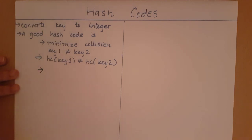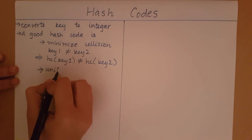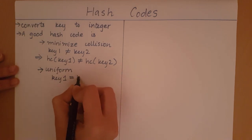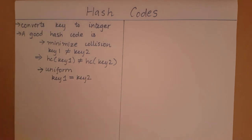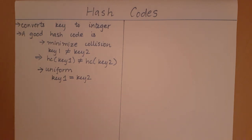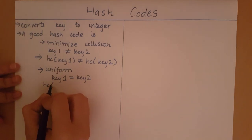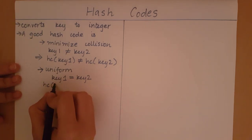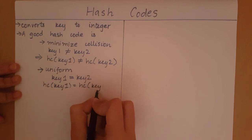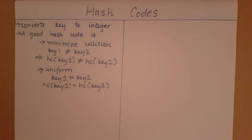The second property of a good hash code is it should be uniform. That is, if key one is equal to key two, I don't want different answers for the hash code. For the same value of the key, if I run my hash code I should always get the same value. So if key one equals key two, then hash code of key one must equal hash code of key two. These are some properties we need to remember.